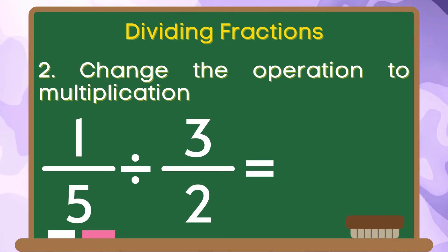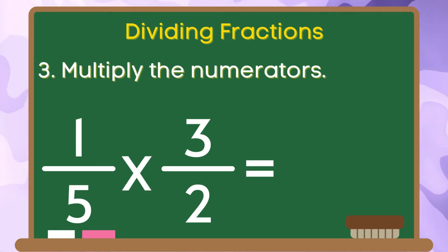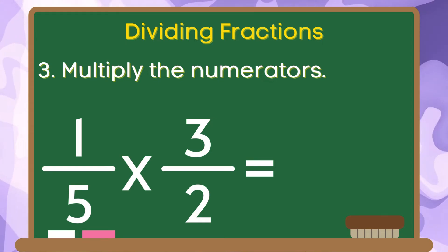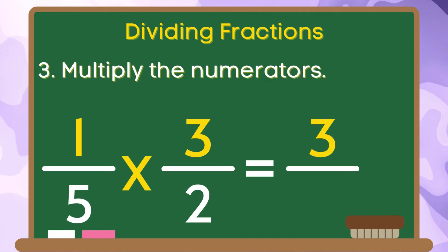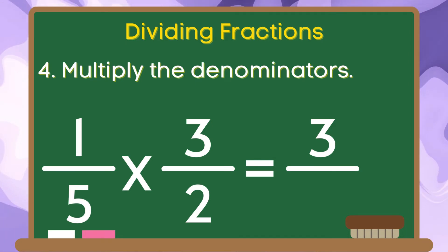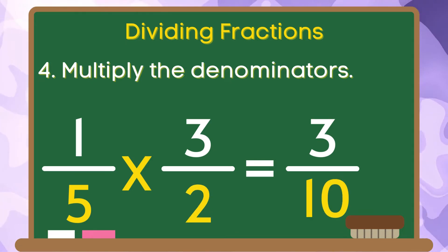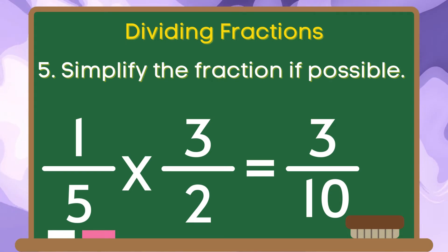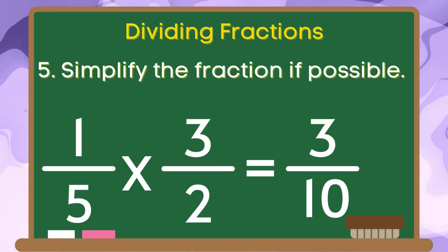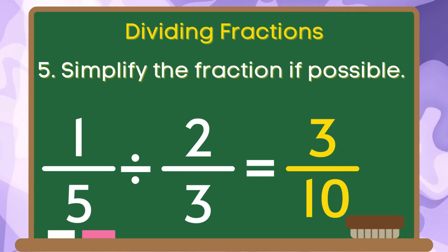Step 2, we are going to change the operation division to multiplication. For step 3, we are going to multiply our numerators. 1 times 3 is equal to 3. For step 4, we are going to multiply our denominators. 5 times 2 is equal to 10. And for the last step, let us simplify the fraction if possible. Since 3 and 10 do not have a common factor, the quotient of 1 fifth and 2 thirds is 3 tenths.